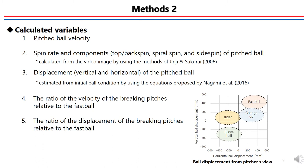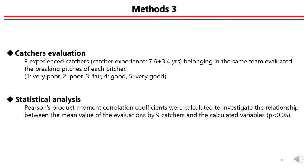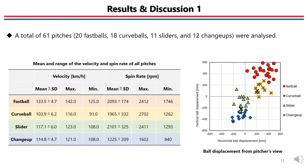The third variable is the displacement of the pitched ball. The displacements were estimated from the pitched ball velocity and spin components using the equation proposed by Nagami et al. The fourth and fifth variables were the ratio of the velocity and the ratio of the displacement of breaking pitches relative to the fastball. Nine experienced catchers belonging to the same team as the pitchers evaluated each breaking pitch. The evaluation used a five-point grading system. Pearson's product moment correlation coefficients were calculated to investigate the relationship between the mean catcher evaluation and the calculated variables. The level of significance was set to less than 5%.